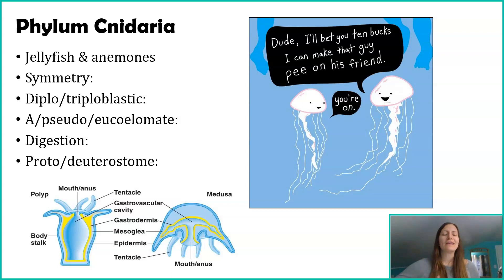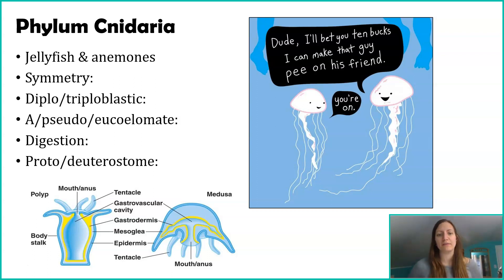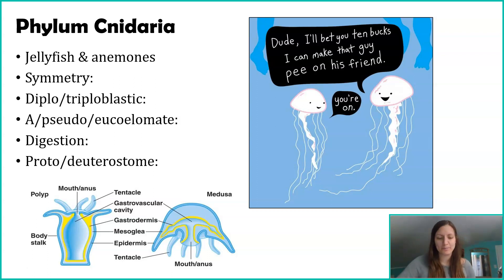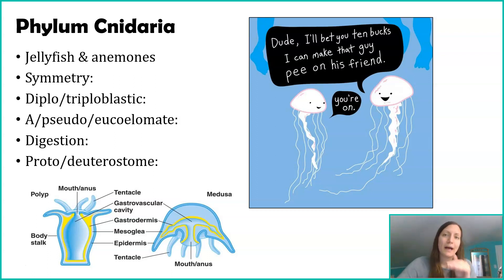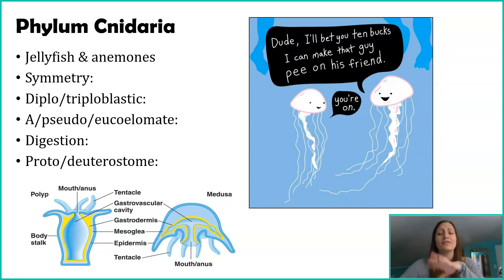These are the general characteristics of all organisms found in Phylum Cnidaria — applying to jellyfish, sea anemones, et cetera. Within Phylum Cnidaria, we're going to talk about a couple of classes. Our organization hierarchy is domain — in this case domain Eukarya — kingdom Animalia, phylum Cnidaria, and we're going to explore a couple of classes.